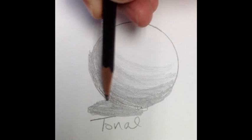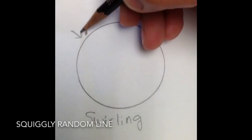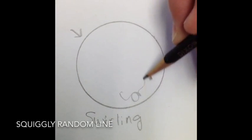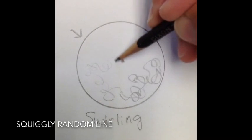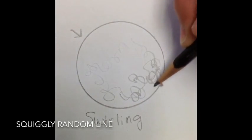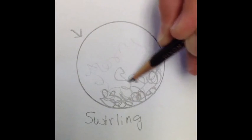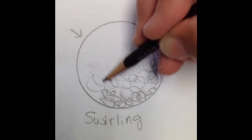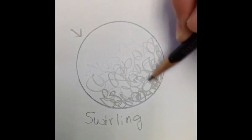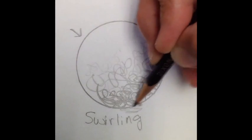Pause your video and do the tonal technique. The next shading technique is swirling—some call it squiggly. They're random swirly lines. It's all about your pressure. If you put more pressure at the bottom, it will make it look darker. Less pressure on your pencil, almost like the pencil's whispering lightly at the top.